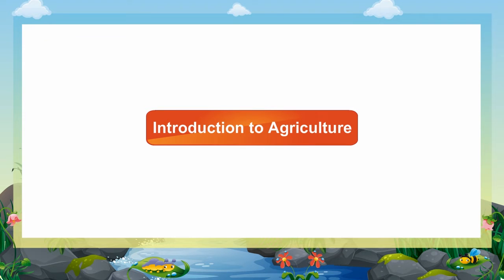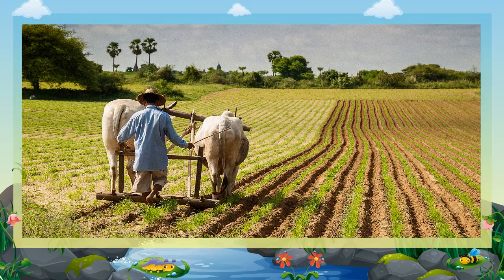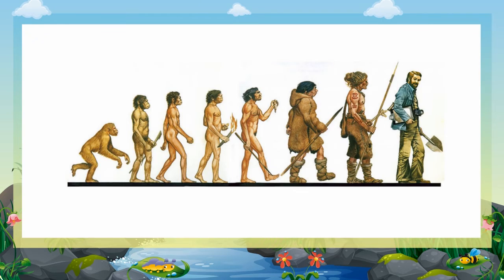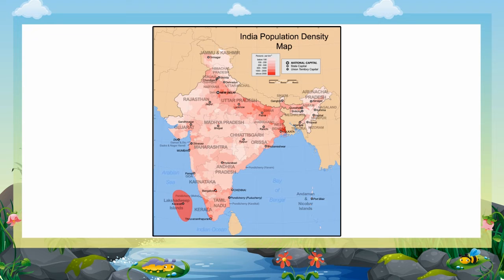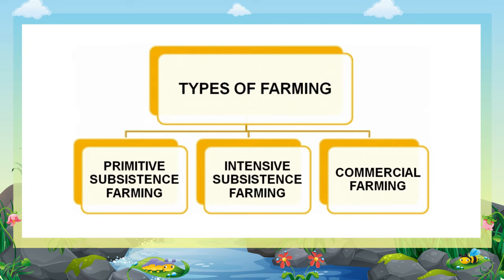Introduction to agriculture: Agriculture is the production of food and goods through farming. Agriculture was the key development that led to the rise of human civilization. India is an agricultural country; nearly two-thirds of the total population of our country depend on agriculture for their livelihood. Basically there are three types of farming in India.